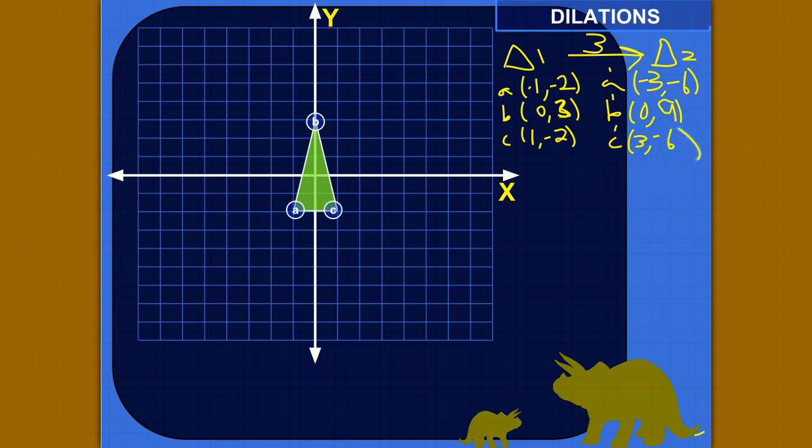Okay, so let's just plot those points to see where our new triangle is. So point A prime is negative three, negative six. So one, two, three, that's negative three. One, two, three, four, five, six.